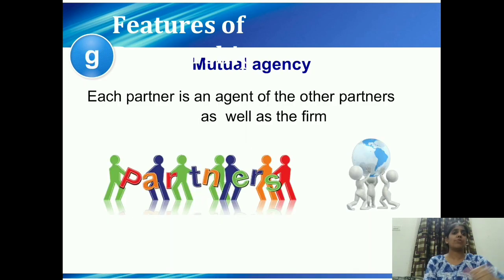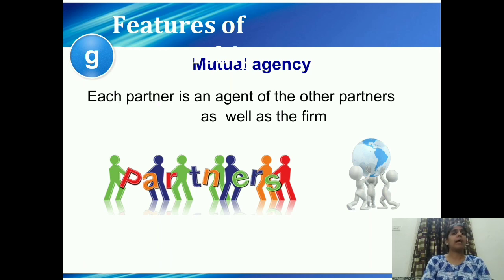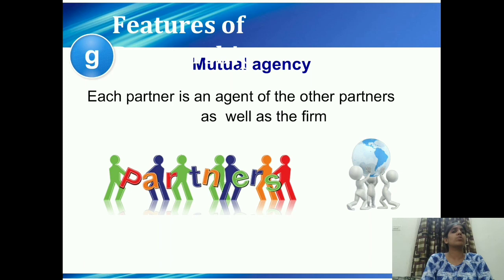The last feature is mutual agency — each partner is an agent of the other partner as well as of the firm. Every partner is both an agent and a worker. We both work together mutually for the firm, so we are partners working for ourselves and also for our firm. Each partner acts as an agent for the firm.